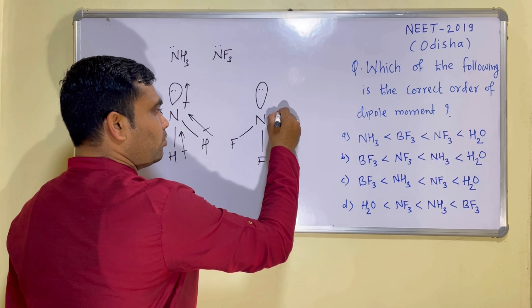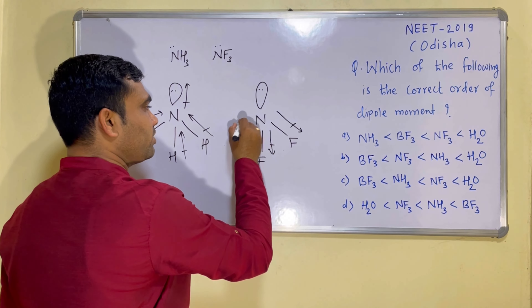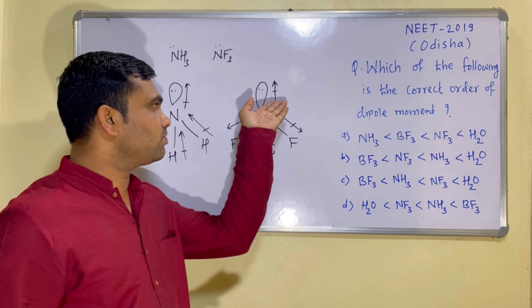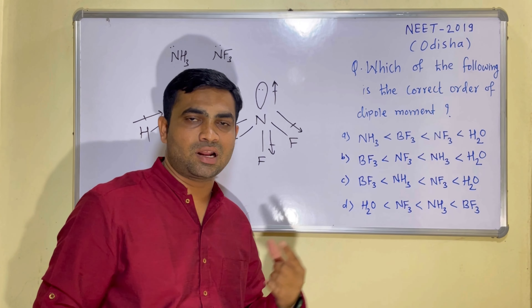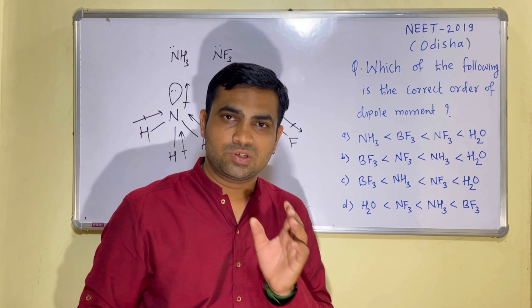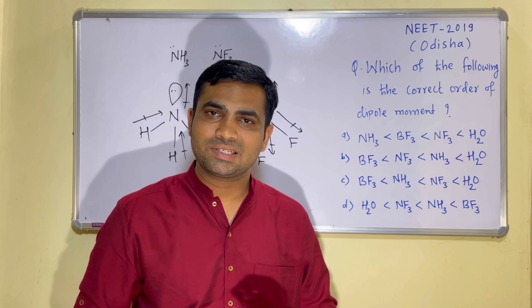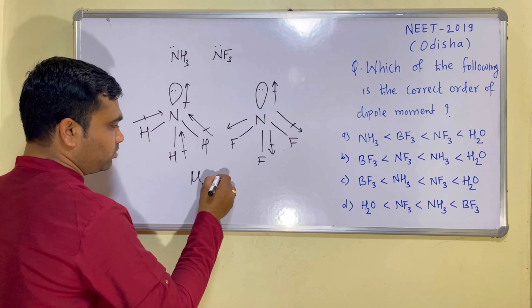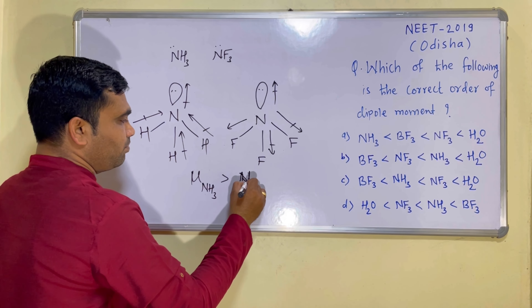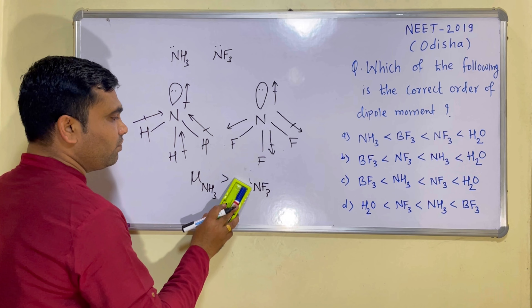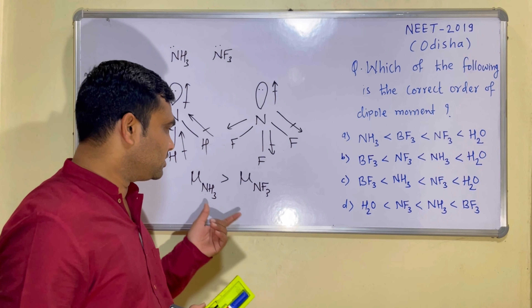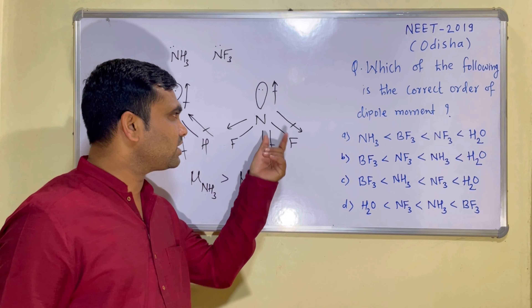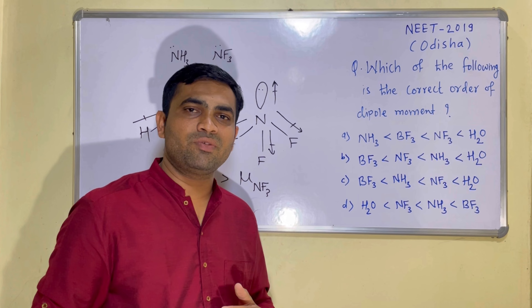In NF3, fluorine is the more electronegative atom, so the bond dipole moment vectors point towards fluorine — away from nitrogen. However, the lone pair vector on nitrogen points in the opposite direction to the bond vectors. Since the bond vectors and the lone pair vector oppose each other, they cancel to a certain extent. Therefore, although mu of NF3 is not zero, it is less compared to the ammonia molecule. So, mu of NH3 is greater than mu of NF3.